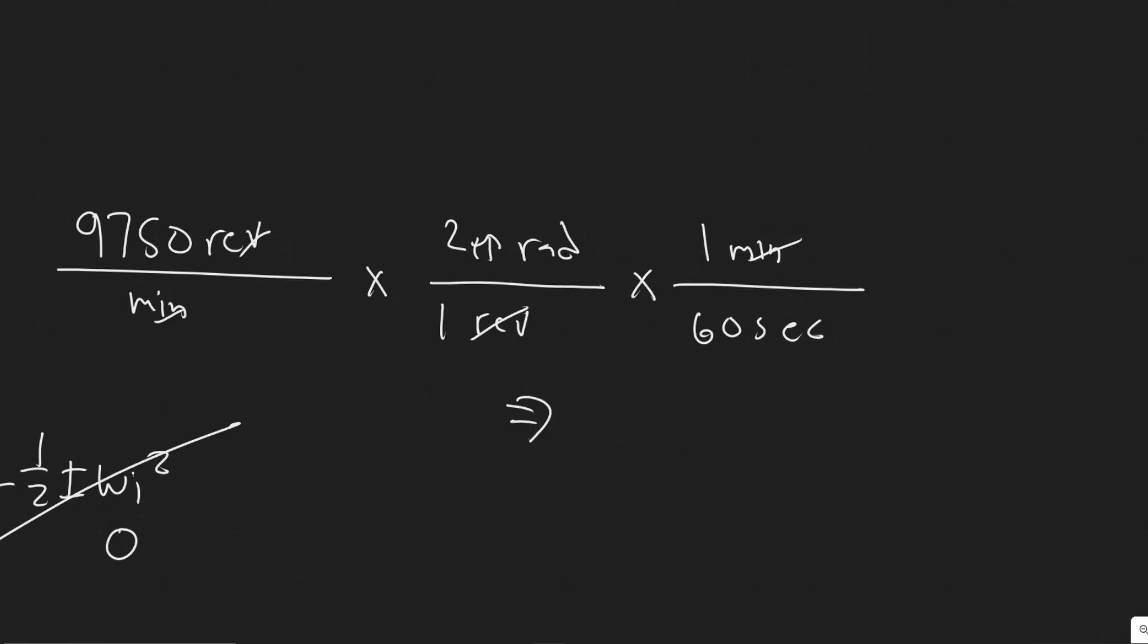Let me plug this in: 9,750 times 2 times pi divided by 60. You're going to get 1,021.018 radians per second.